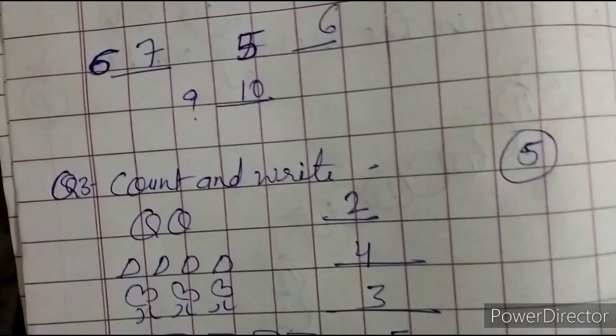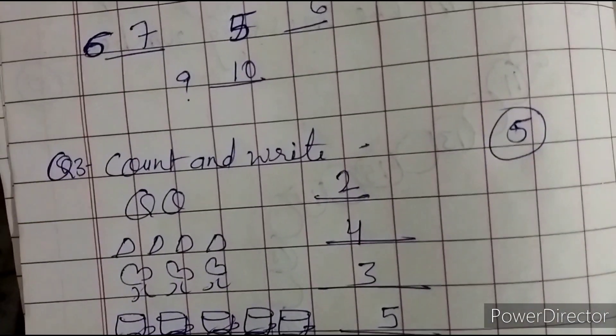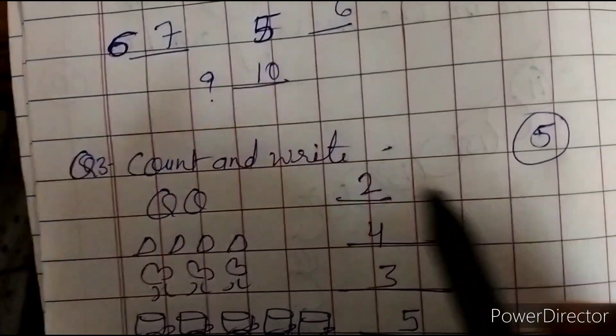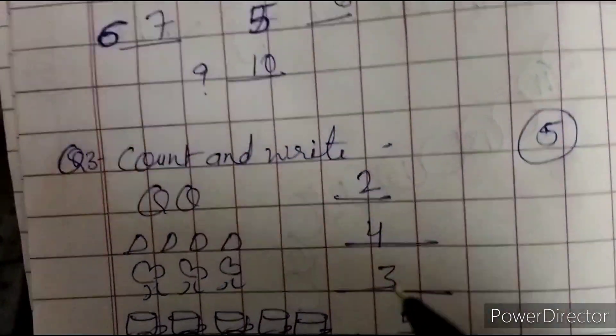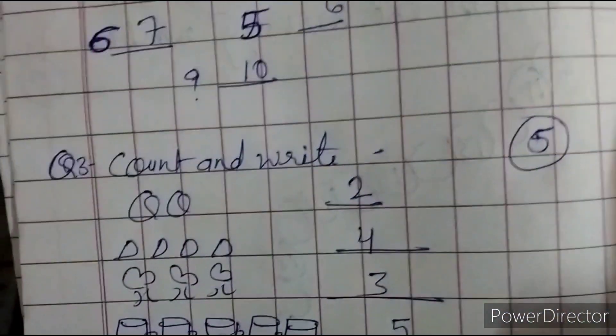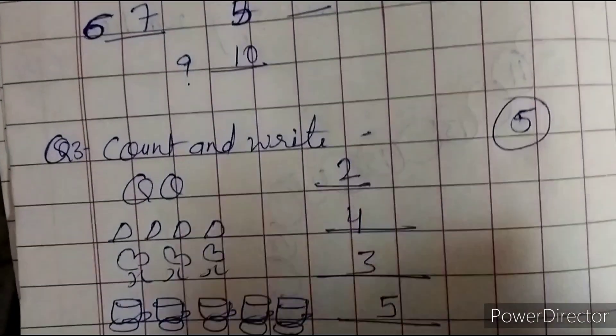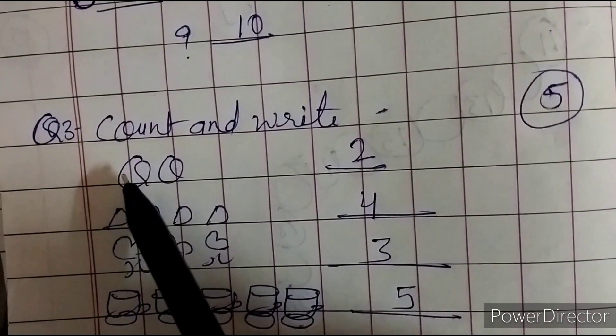Now this is count and write. I will explain you all this because you are in exam. Then you will say that I haven't done it. Now I have made some pictures. They will count and write. Like a ball. I have made some balls.